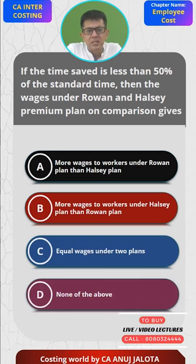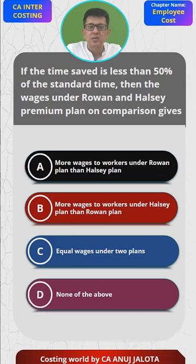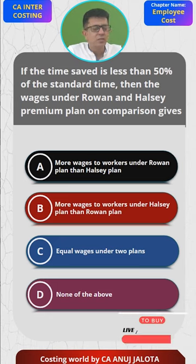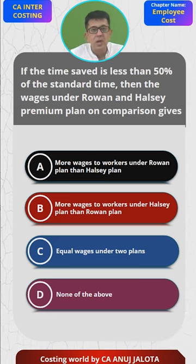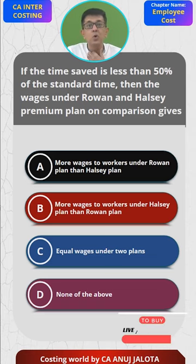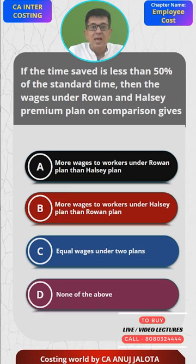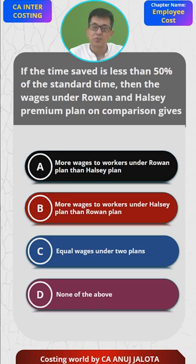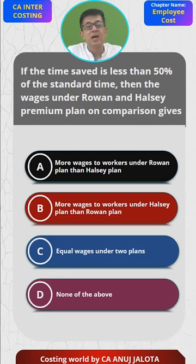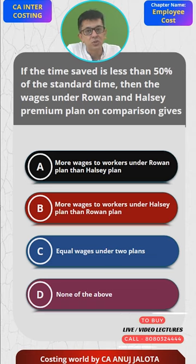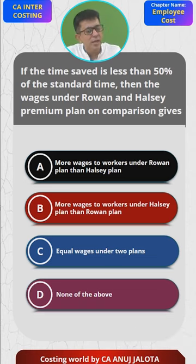If time allowed is 10 hours and time taken is exactly half, that is 5 hours, Halsey and Rowan give the same result, so the answer would be C. But if a worker takes 6, 7, 8, or 9 hours, Rowan gives higher wages — that is the advantage of Rowan over Halsey. If the job is completed in less than half the time, say 4, 3, or 2 hours, then Halsey gives the higher answer, which is also a disadvantage of Halsey as it makes workers speed up production.